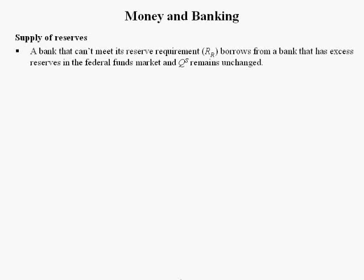but bank B was a little too aggressive making loans and as a result it's a million dollars shy of meeting its reserve requirement. So bank B will call up bank A and say, hey, I notice you have a million dollars of excess reserves at the Fed. Can I borrow that from you? And if bank A says yes, they'll say yes, but you have to pay me interest. Bank B will pay back the million dollars with interest, and interest is computed using the federal funds interest rate.